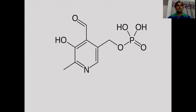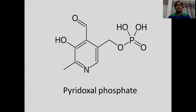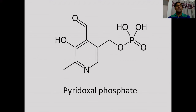Pyridoxal phosphate, also known as PLP or P5P, is the active form of vitamin B6 and is a coenzyme in a variety of enzymatic reactions. This PLP molecule acts as a coenzyme in all transamination reactions and in certain decarboxylation, deamination, and racemization reactions of amino acids.